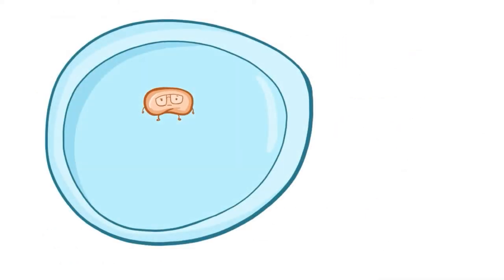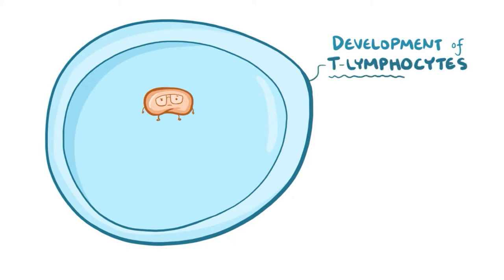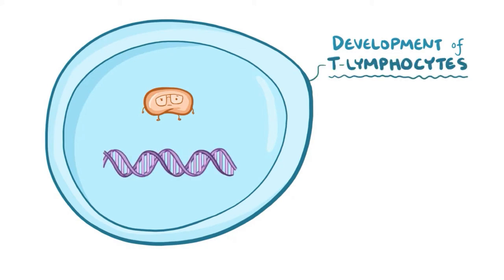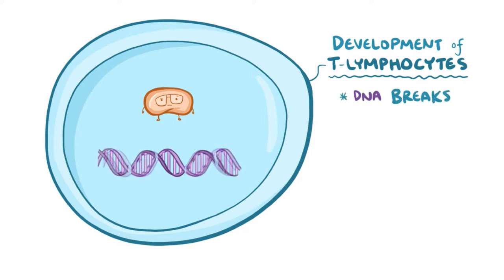ATM also plays a role in the development of immune cells, especially T lymphocytes. T lymphocytes need to be able to recognize a wide variety of antigens, and to do this they purposefully make double-stranded breaks in their DNA during development.